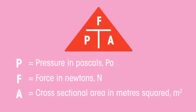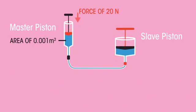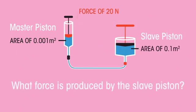Remember pressure is calculated using the equation. A force of 20 newtons is applied to the master piston, which has an area of 0.001 meter squared. The slave piston has a surface area of 0.1 meter squared. What force is produced by the slave piston?